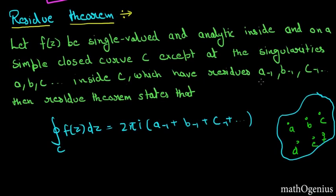Which have residues a_{-1}, b_{-1}, c_{-1}. Then residue theorem states that integration along that curve ∮f(z)dz is equal to 2πi times the sum of all residues at those points.